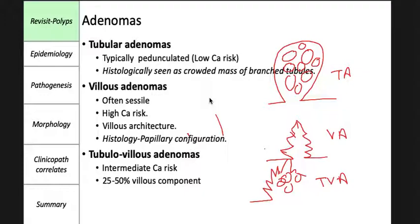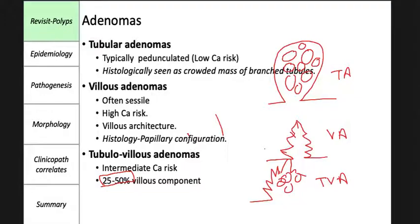Tubular adenomas are typically pedunculated and have a low risk of cancer, showing a crowded mass of branched tubules. Villous adenomas are often sessile, carry increased risk of cancer, have a villous architecture, and look papillary under the microscope. A tubulovillous adenoma is a mixture defined by a 25 to 50 percent villous component. This is a gray zone with significant inter-observer variability among pathologists.